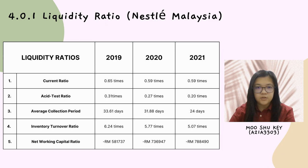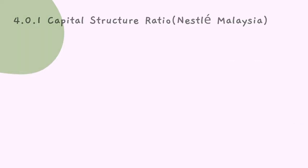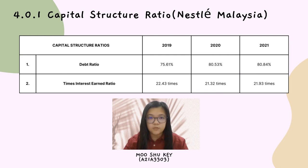Next, liquidity ratio. The liquidity ratio includes current ratio, acid test ratio, average collection period, inventory turnover ratio, and net working capital ratio. Capital structure ratio: the debt ratio of Nestlé Malaysia in 2021 increased compared to 2019 and 2020. The times interest earned ratio in 2021 is 21.93 times.